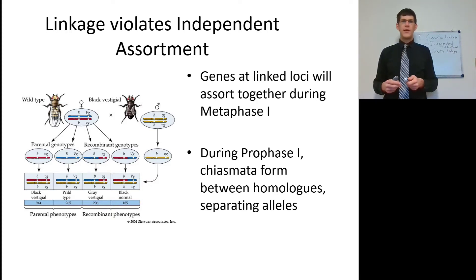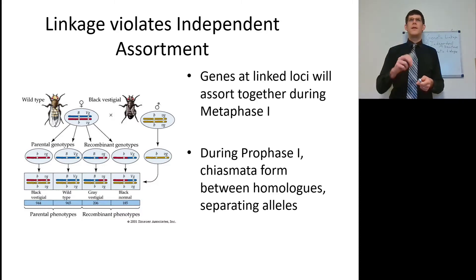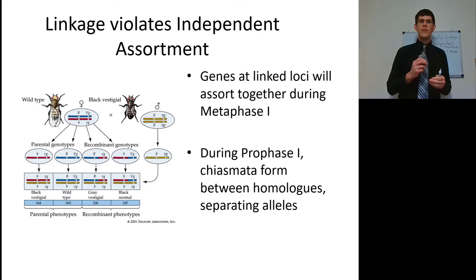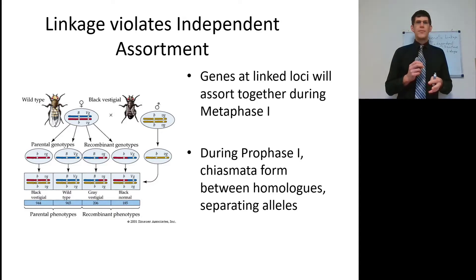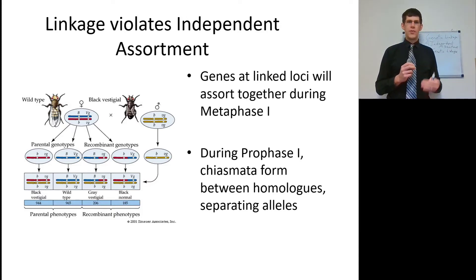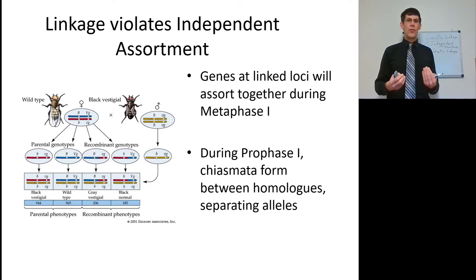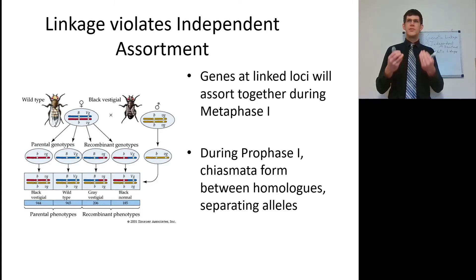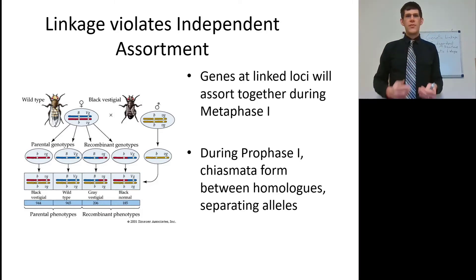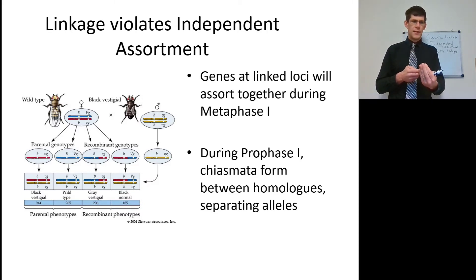This does violate independent assortment because only when recombination occurs will you see the recombinant genotypes. Much more often you're only going to see those two parental genotypes. Unless there is recombination, that wild type can only make two types of gametes for these two linked genes. That's where this is different from independent assortment.